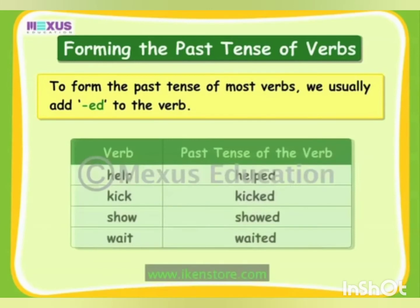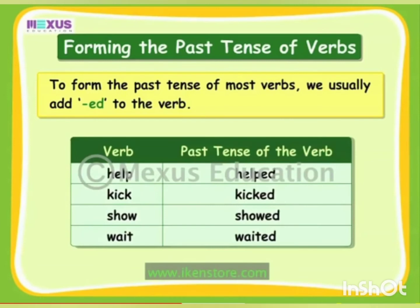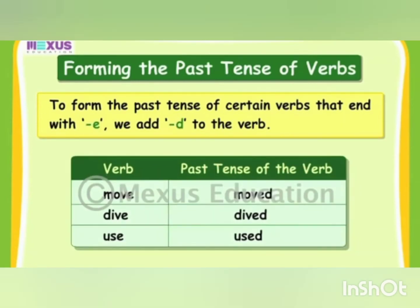Children, we usually add -ed to the verb to form the past tense. To form the past tense of certain verbs that end with 'e', we add 'd' to the verb. For example, 'move' — the end letter is 'e', so we add 'd': move, moved. Similarly, dive becomes dived, and use becomes used.